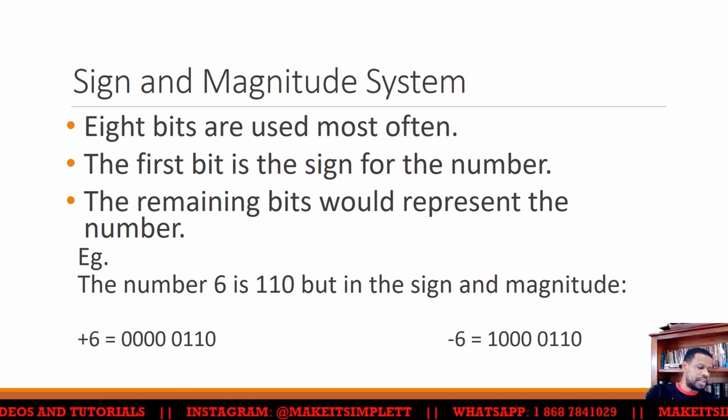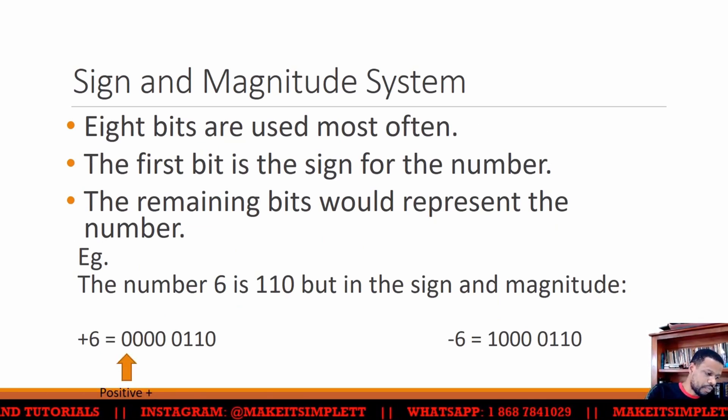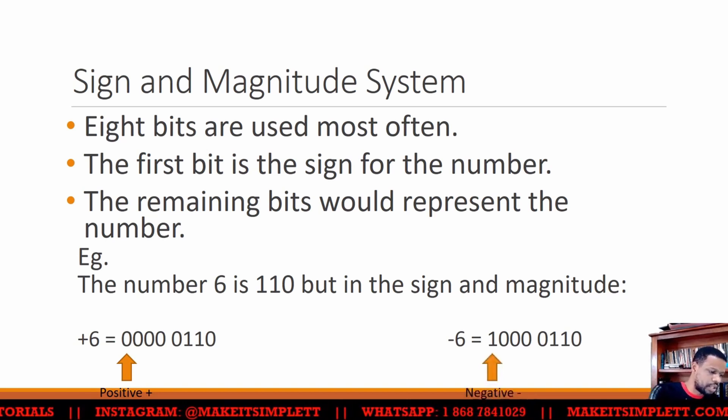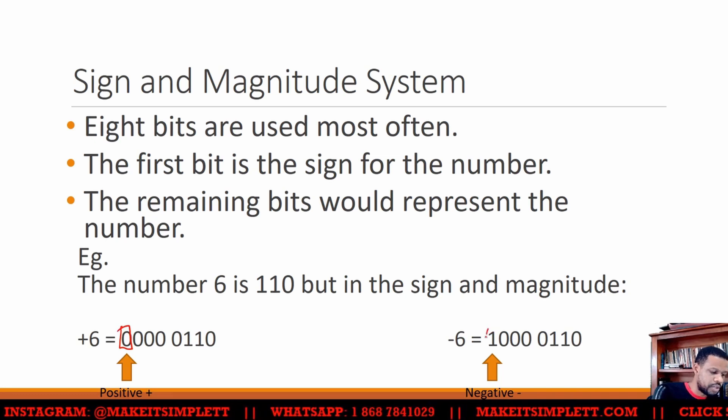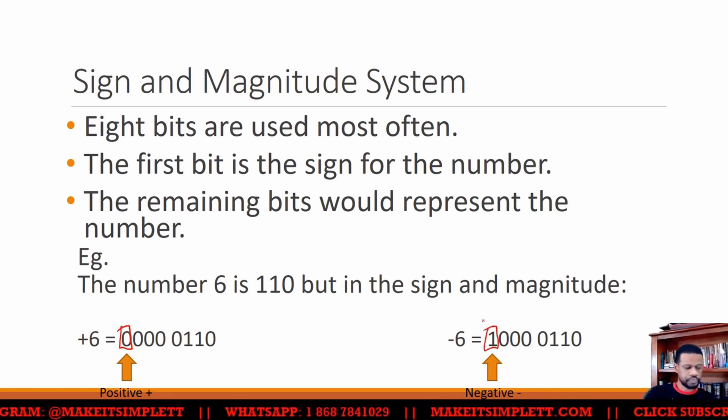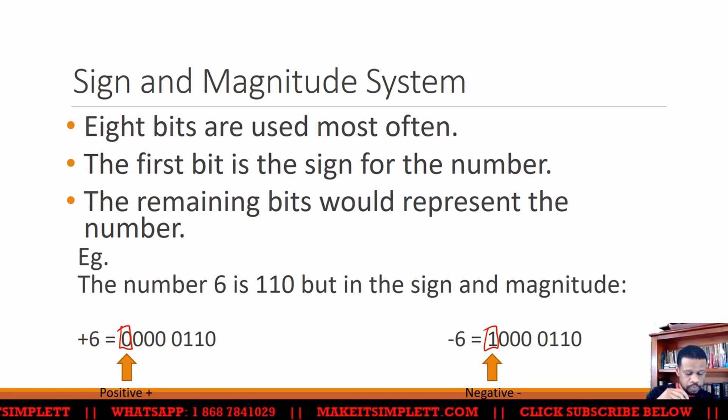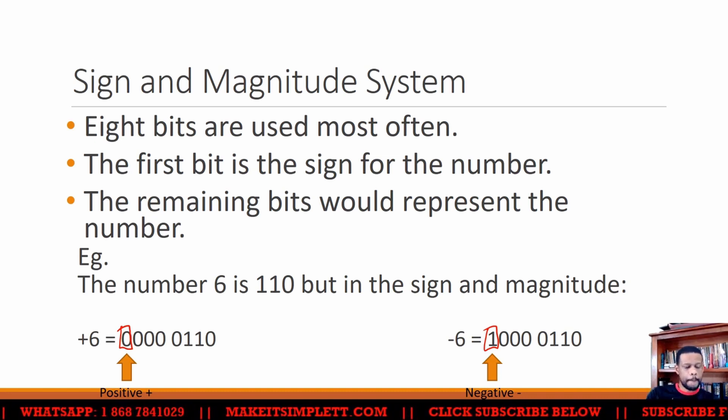The next one is sign and magnitude. Sign and magnitude will use a certain amount of bits, but the first bit is always going to be reserved for the sign. So if you have a zero, it's a positive number. If you have a one, it's a negative number.